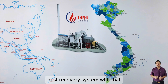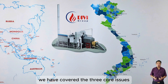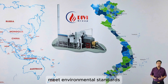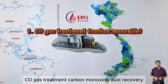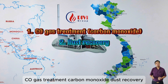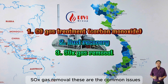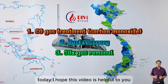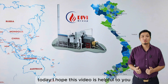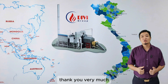With that, we have covered the three core issues to ensure boiler emissions meet environmental standards. To summarize the three key points: CO gas treatment (carbon monoxide), dust recovery, and SOx gas removal. These are the common issues facing industrial boilers in the Vietnamese market today. I hope this video is helpful to you. Thank you very much.